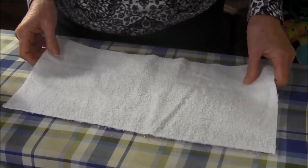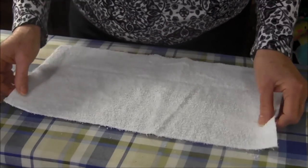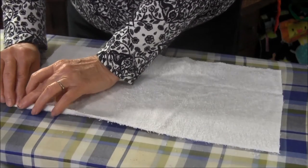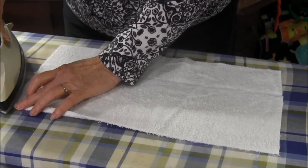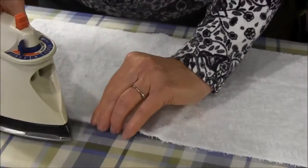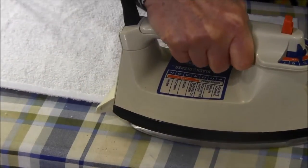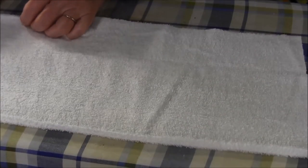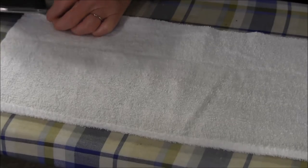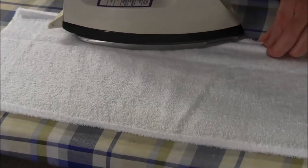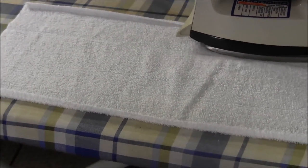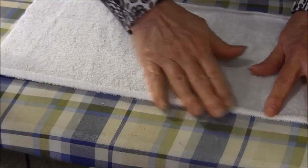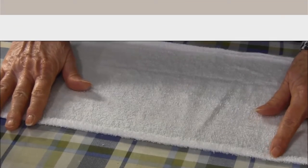The first thing you're going to do is on the long sides of the material you're going to turn it under a quarter of an inch and press it. I'm going to do the same thing on the other long side. And next we're going to go to the sewing machine and we're going to sew it down using a zigzag stitch.